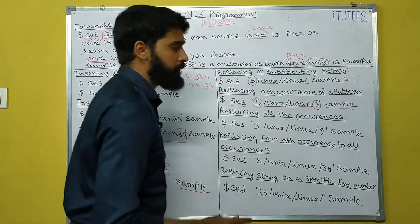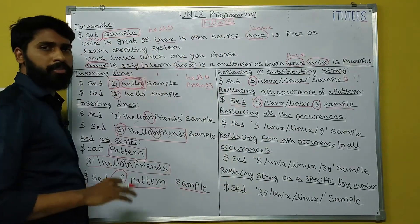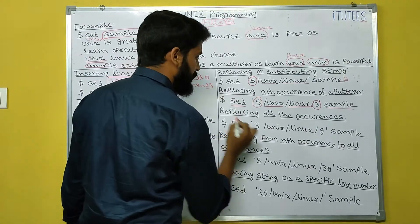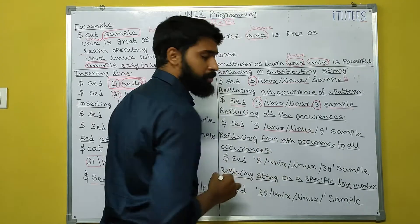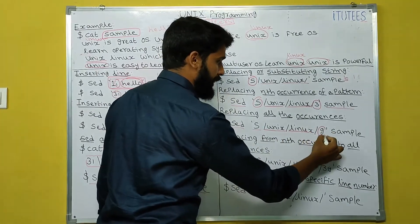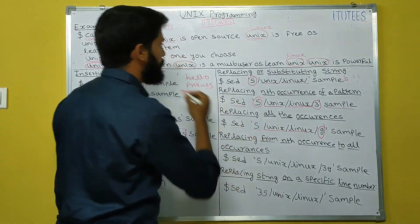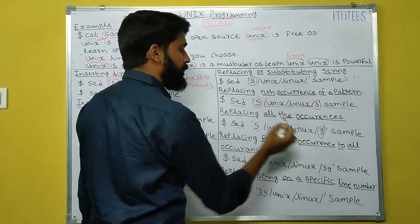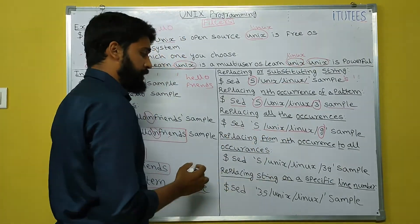Replacing all occurrences: to replace all instances of unix with linux, use: SED 's/unix/linux/g' sample. The 'g' flag means global — all unix words in every line are replaced with linux.